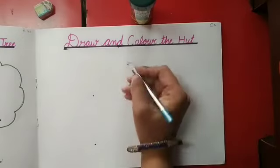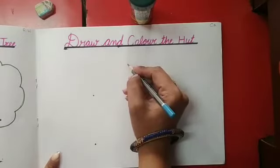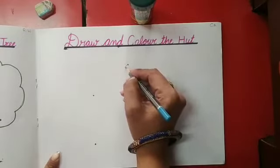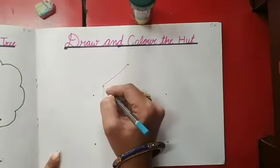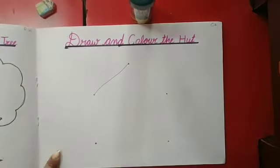Sab se pehle hem kya jaheengi? Top pick. Upar jaheengi. And draw one slanting line. Aar one slanting line draw karengi. Like this.